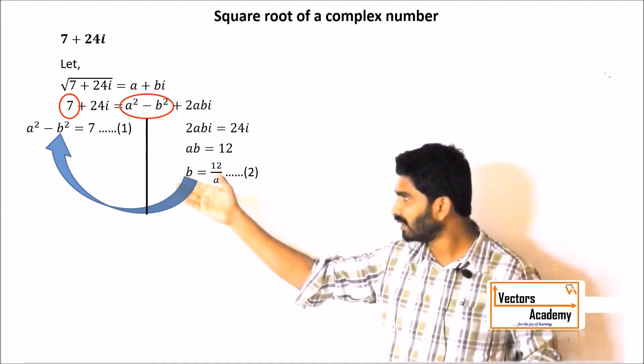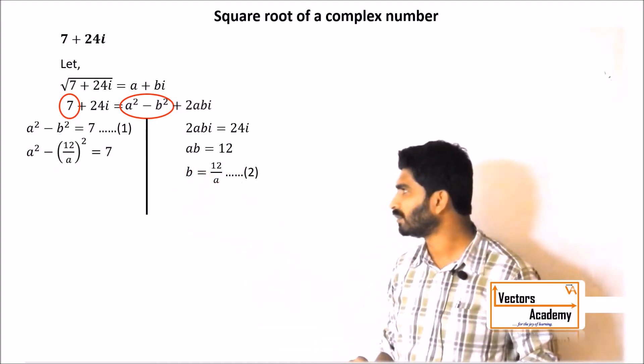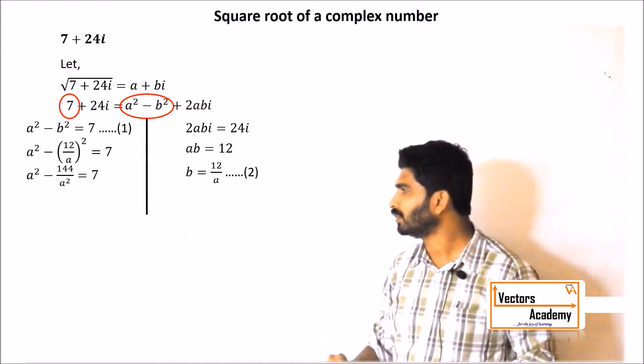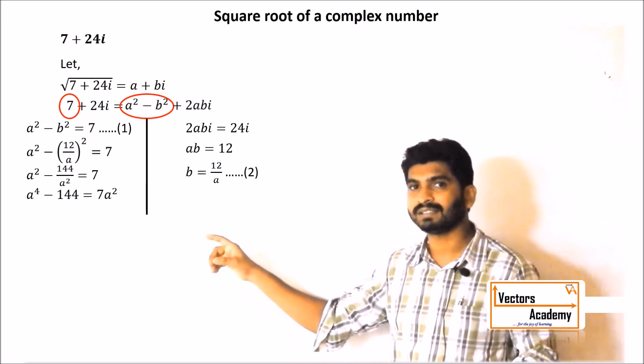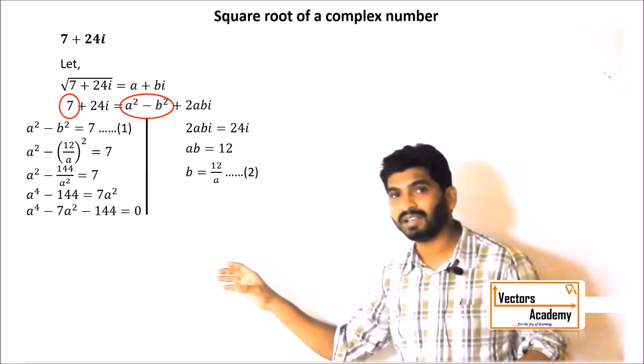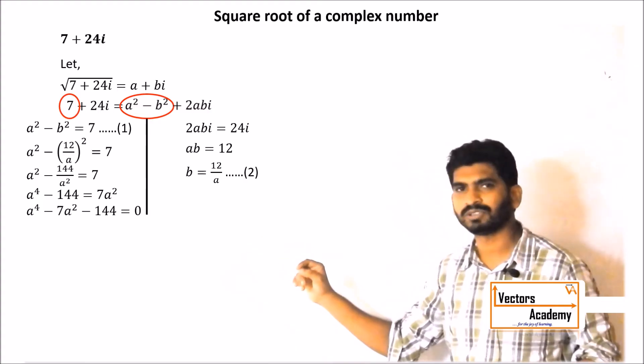This value of b can be substituted in equation 1. The equation which we will get is a² minus 7ab minus 144 equal to 0.